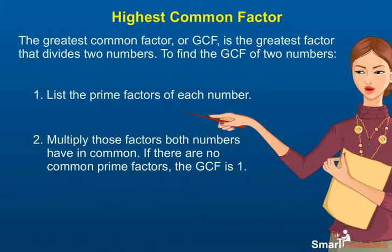1. List the prime factors of each number. 2. Multiply those factors both numbers have in common. If there are no common prime factors,